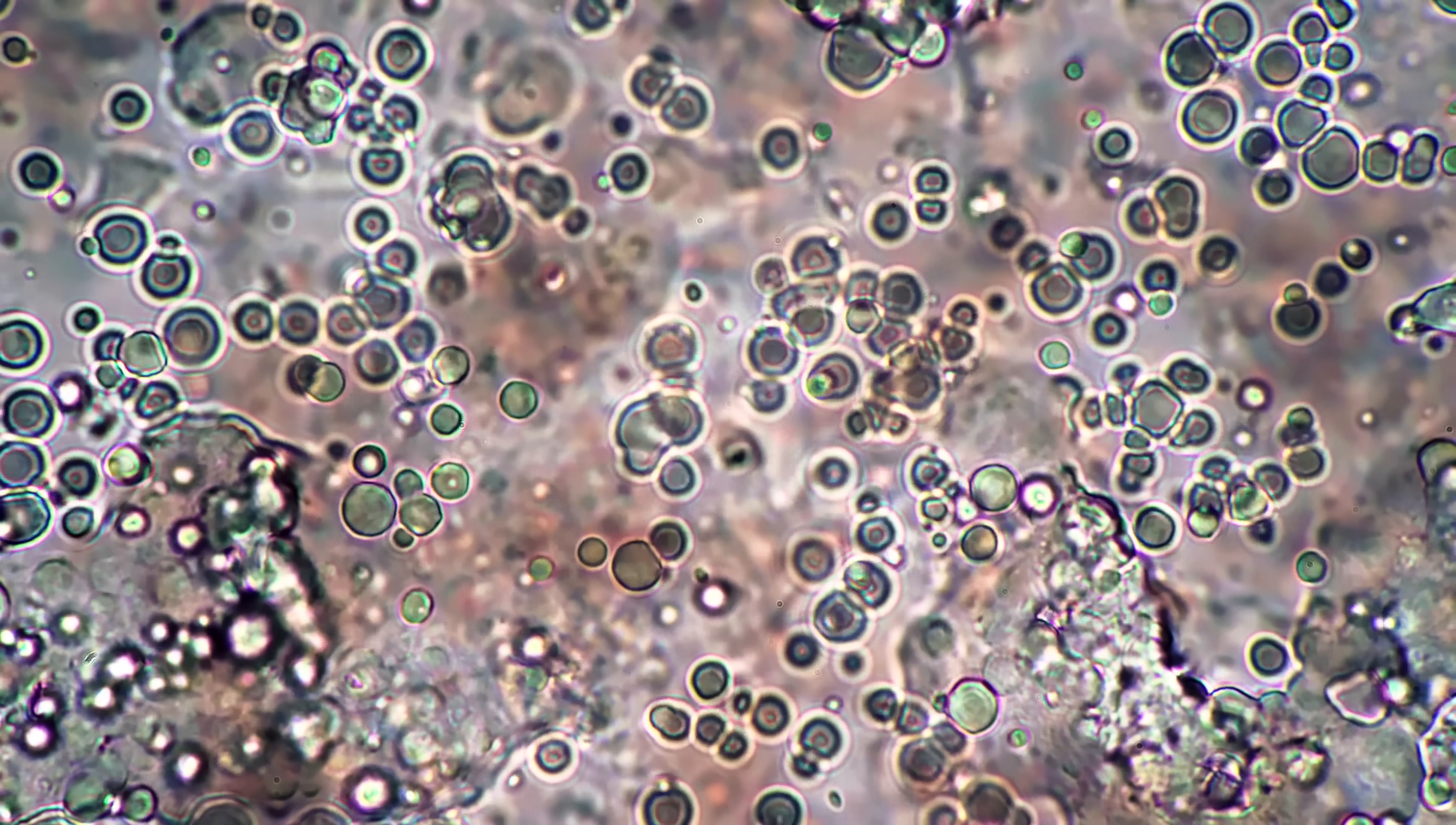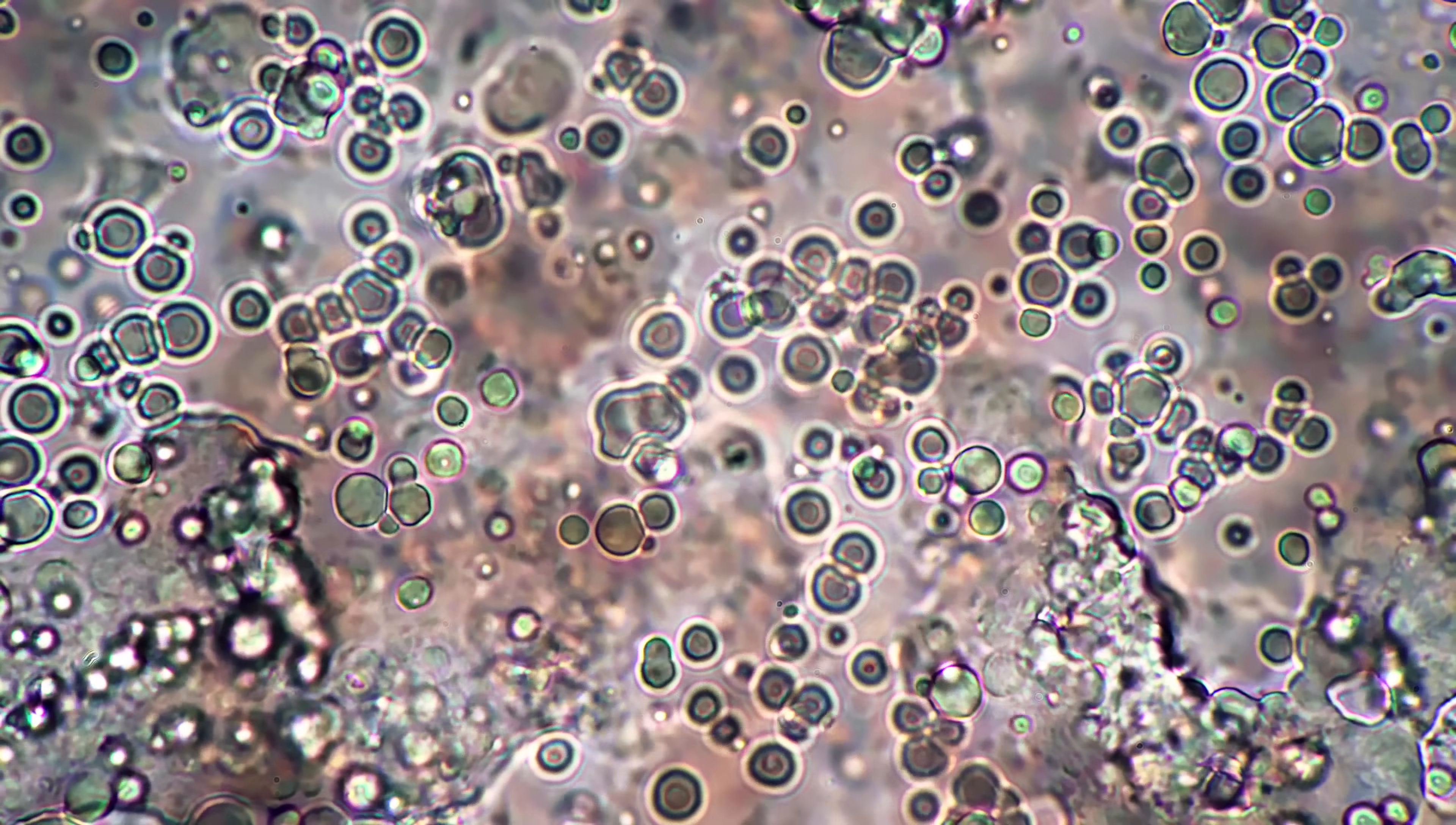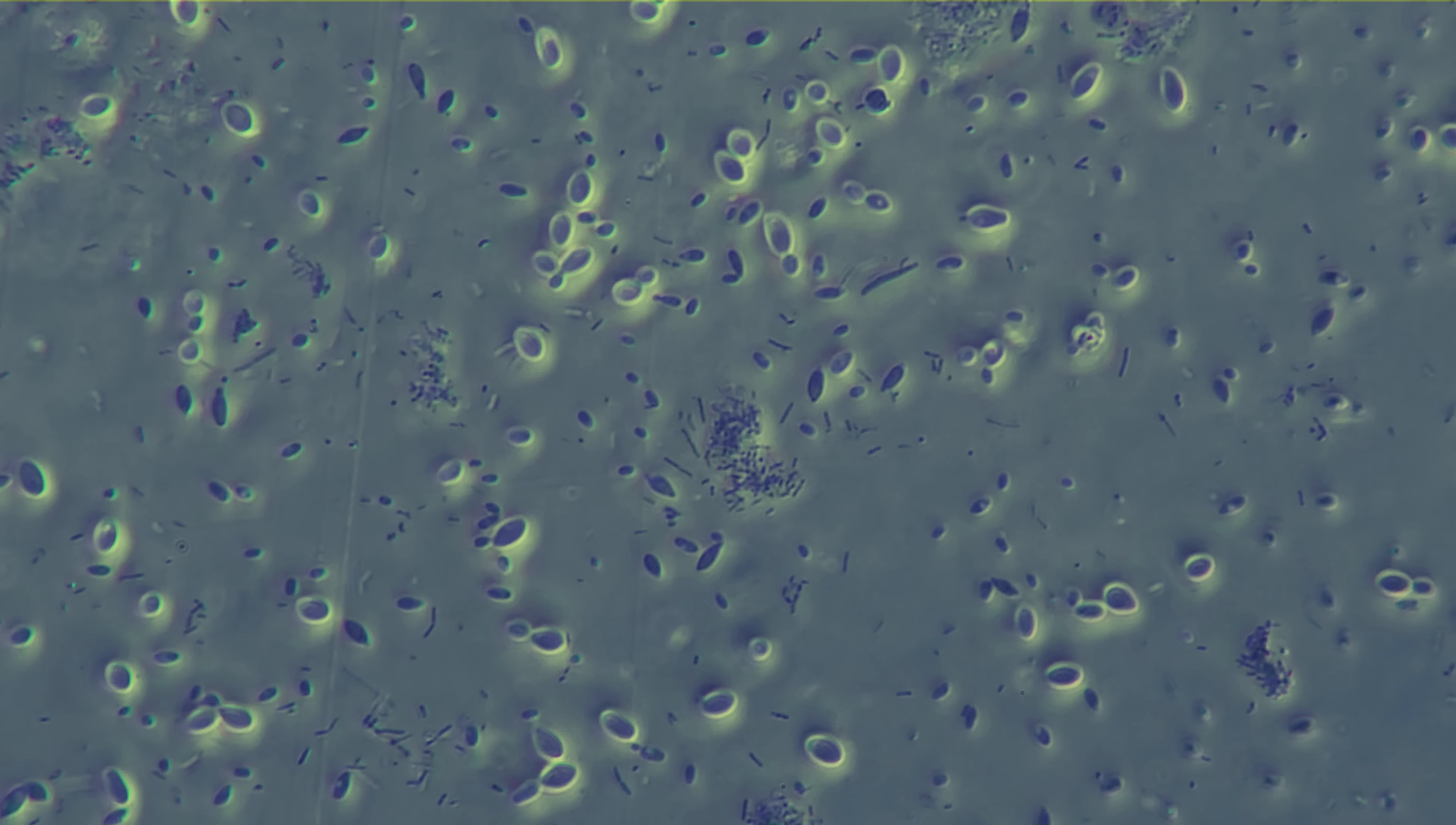I really wanted to make a video about Brownian motion, this jiggling motion you can see under a microscope, because Brownian motion does something incredible. It creates a bridge between two worlds, the atomic world and the macro scale world. And in that in-between world, none other than Albert Einstein was able to do something amazing.